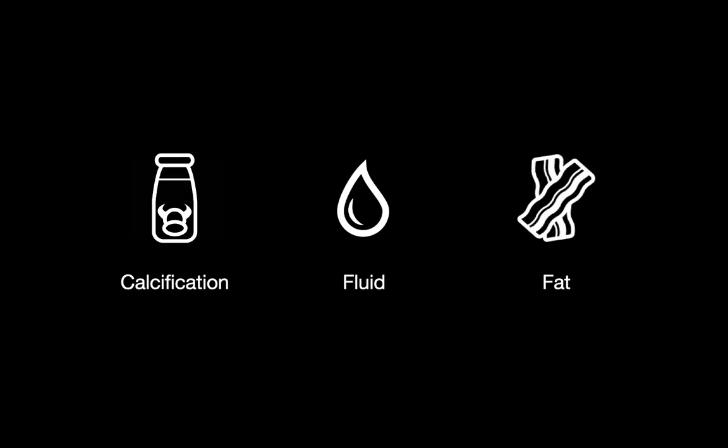So how can we be the best we can be when trying to offer a reasonable differential diagnosis when we see an anterior mediastinal mass on chest CT? Most radiologists will come up with three major features they'll try to use to diagnose an anterior mediastinal mass: calcification, fluid, and fat.